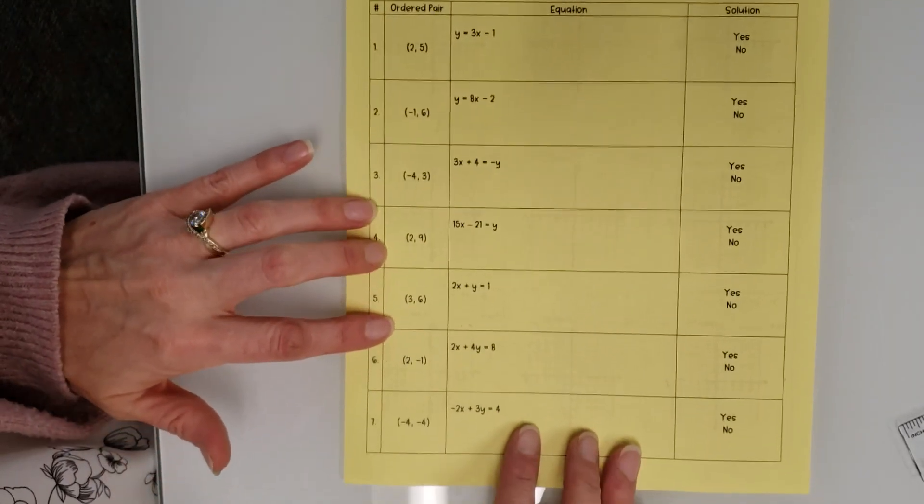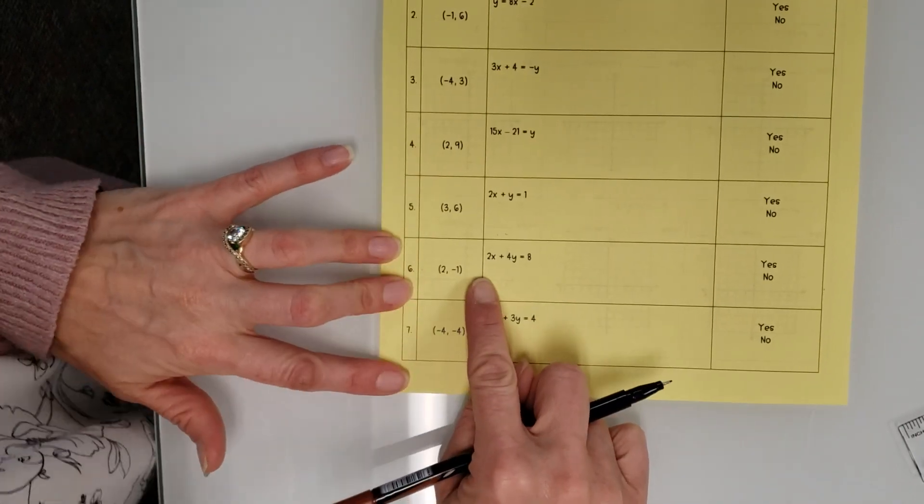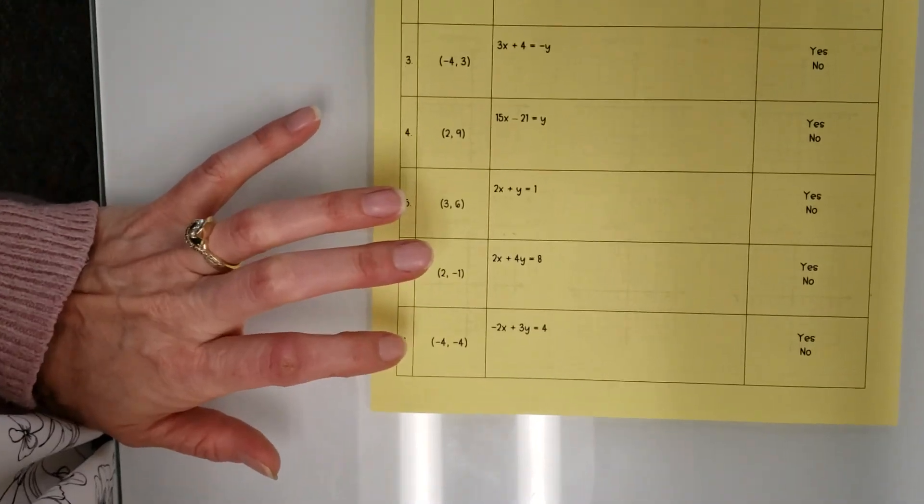So, let's see, I'll come down here and I'll do number 6 with you guys. So, if you look, this, I have the point 2, negative 1 and I want to know is it the solution to the equation 2x plus 4y equals 8. So again, this is my x, this is my y. I just plug those into the equation. So instead of 2 times x, I have 2 times 2.